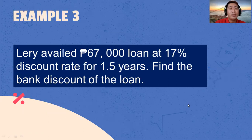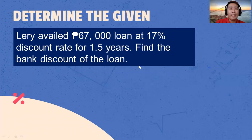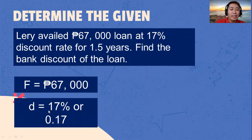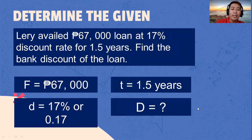Number three: Larry availed a 67,000 pesos loan at a 17% discount rate for 1.5 years. Let's find the bank discount. Given: maturity value is 67,000 pesos. The discount rate is 17%, or 0.17 — divide 17 by 100. The time is 1.5 years and we are going to determine the bank discount.